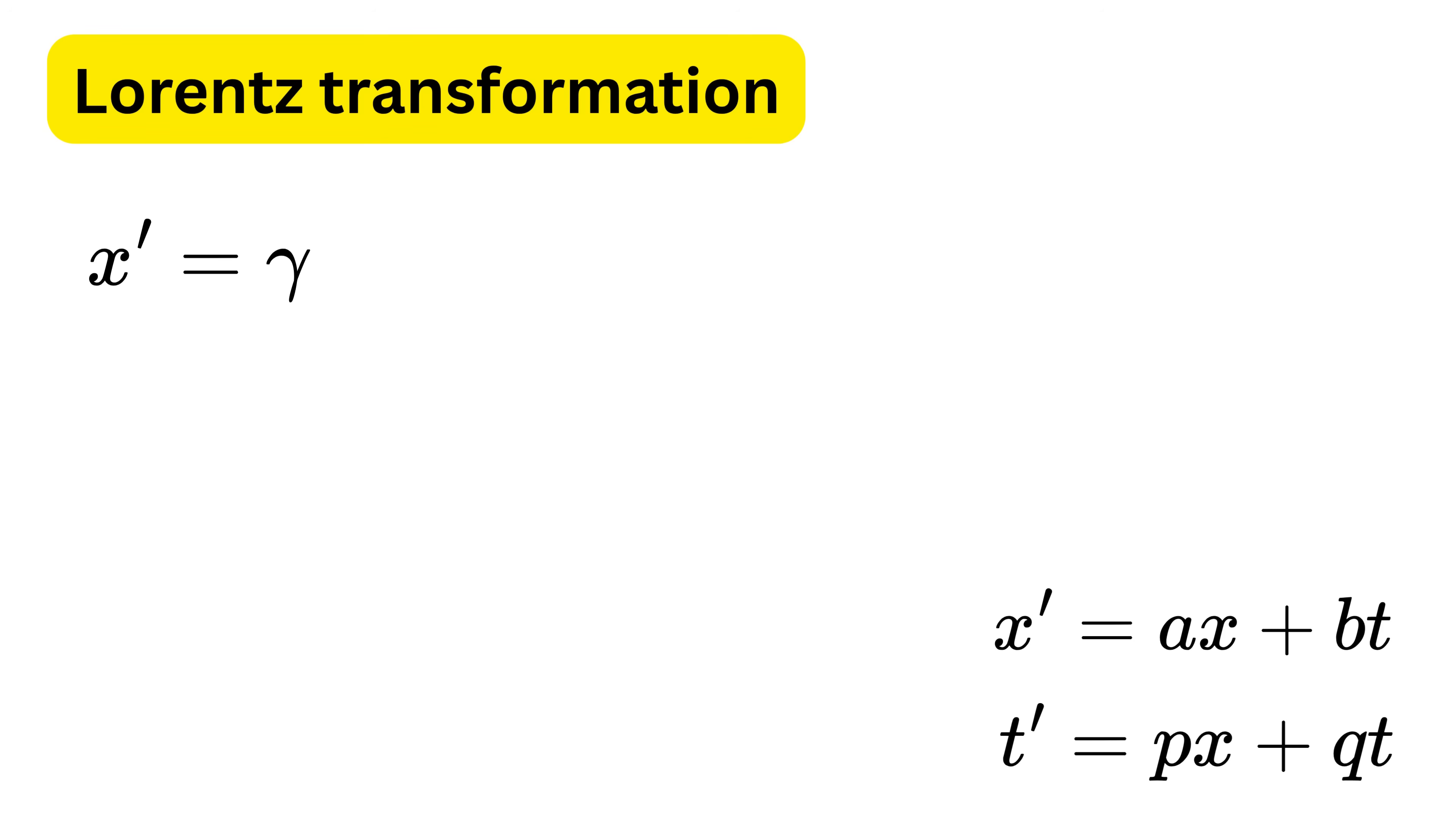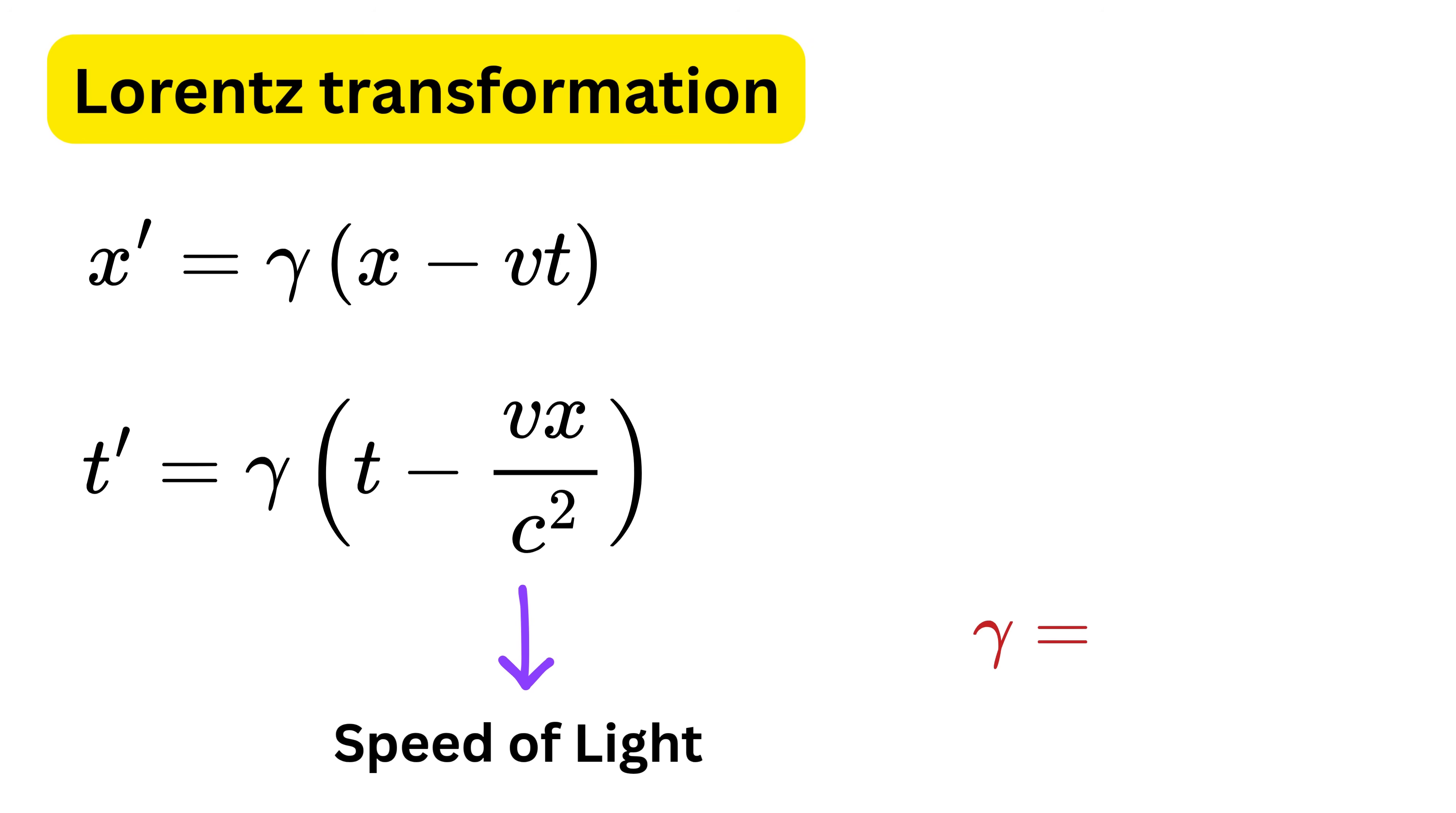x prime is equal to gamma times (x minus v times t). Then t prime is equal to gamma times (t minus v divided by c squared times x). This c is the speed of light.